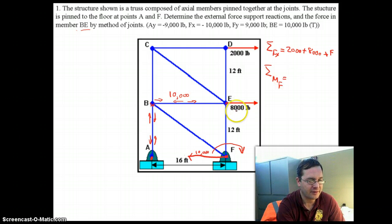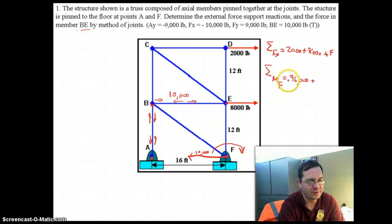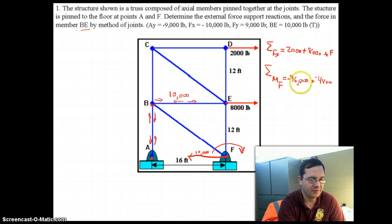So, let's calculate the sum of the moments about point F. Well, what would it equal? It would equal 8,000 pounds times 12 feet. That's 96,000 pounds, and let's think about this moment. It's a clockwise moment. So, it would actually be a negative number just by convention, plus 2,000 pounds times what's the distance from point F, 24 feet. So, another negative 48,000 foot pounds.